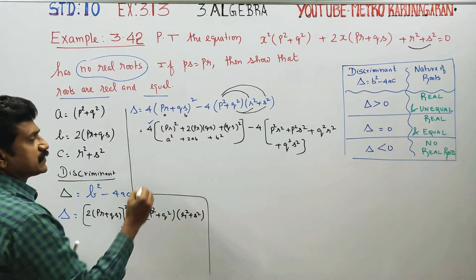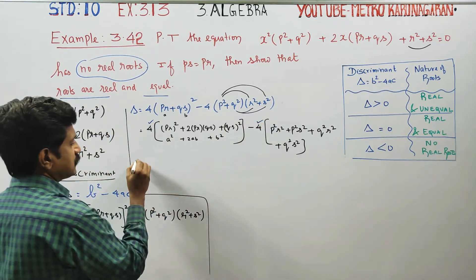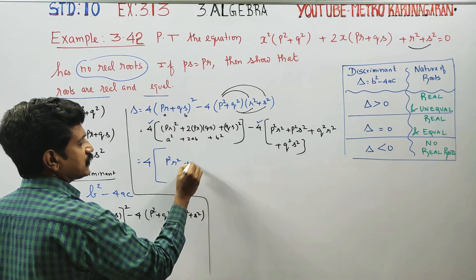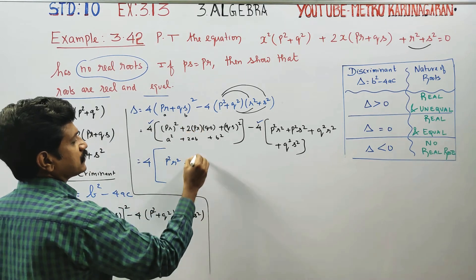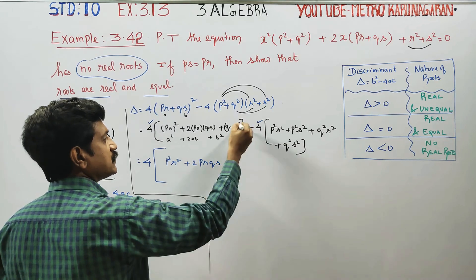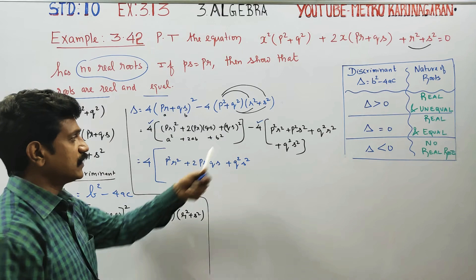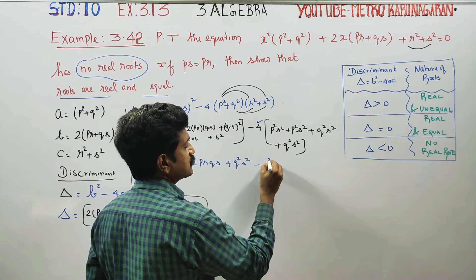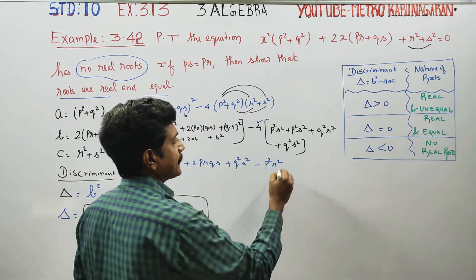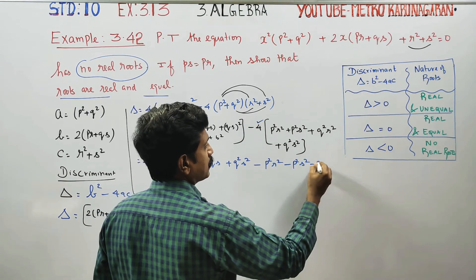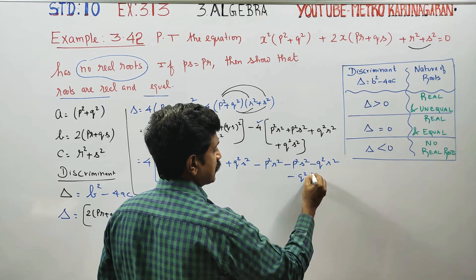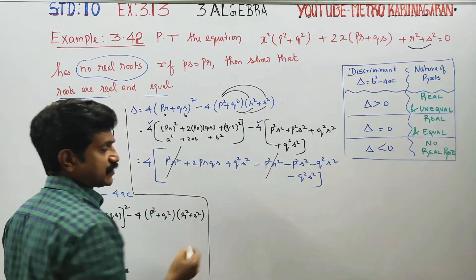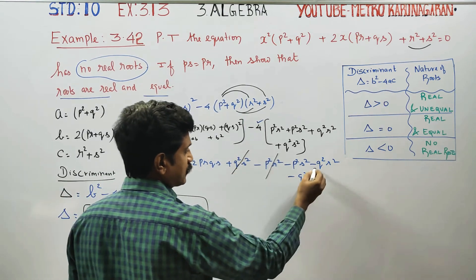After expanding, we get terms: 4 times [p²r² plus 2pr·qs plus q²s²] minus 4 times [p²r² minus p²s² minus q²r² minus q²s²]. The p²r² terms cancel out.